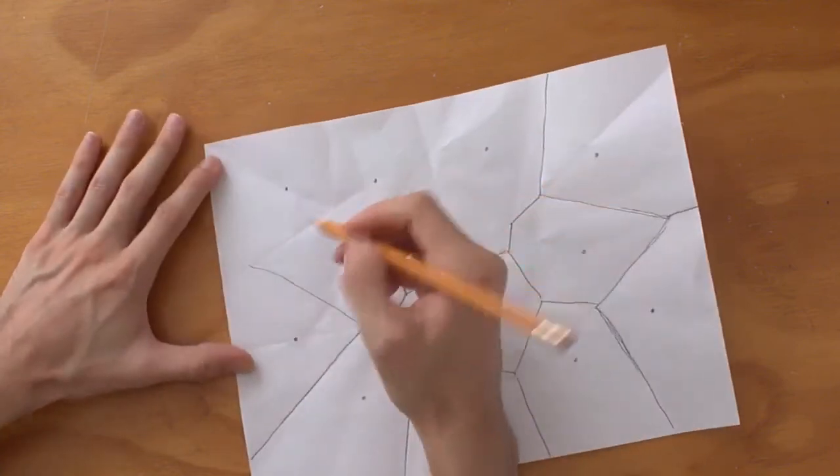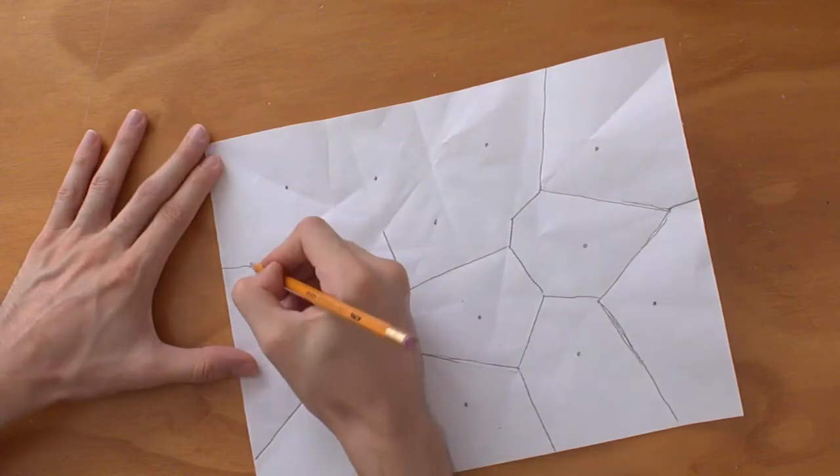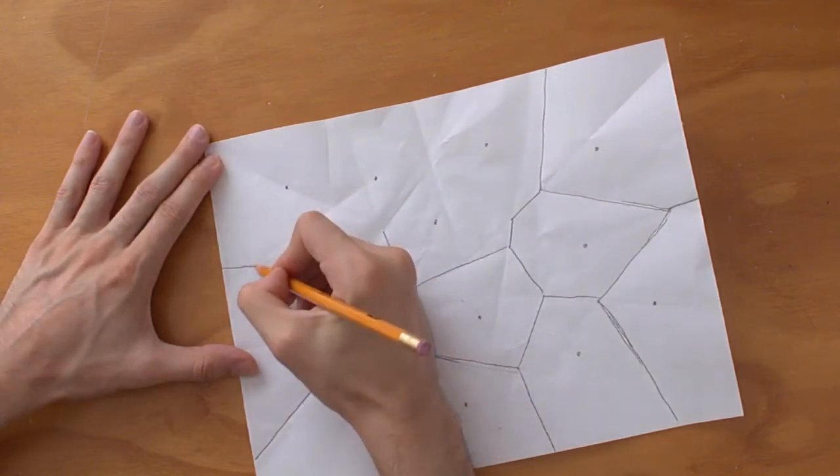This one goes all the way, hits here, and goes all the way again. These two are now neighbors and it is this one, but it's not the same line. This is actually changing directions.